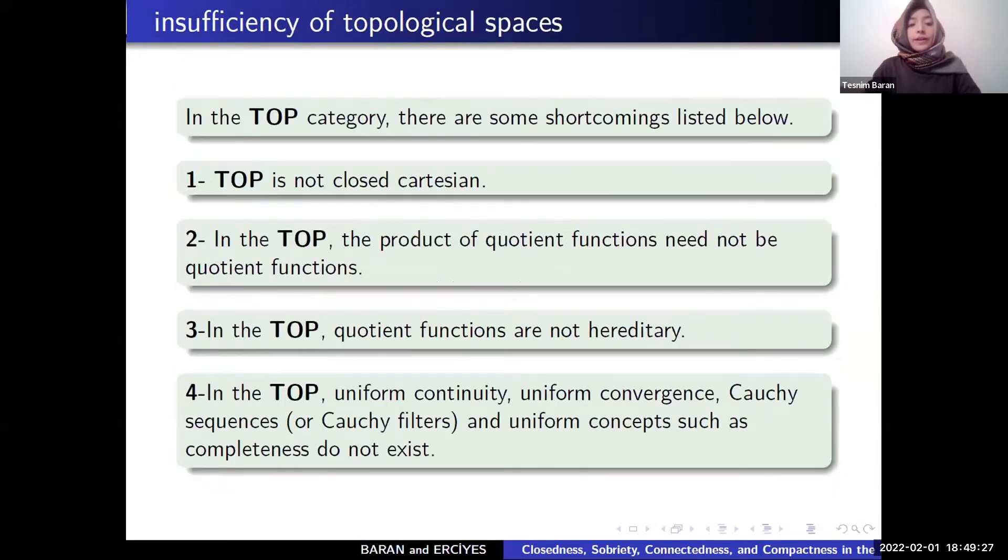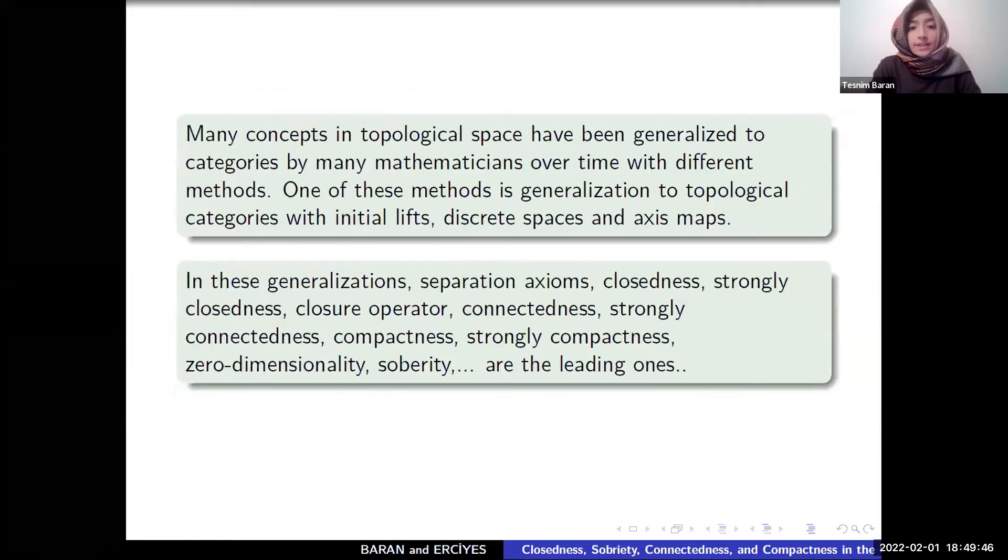And why top is not necessary? Because top is not Cartesian closed, the product of quotient functions need not be quotient functions. Quotient functions are not hereditary. Uniform convergence, quotient uniform, and confluencessness don't exist.